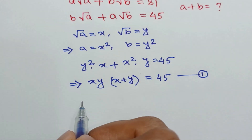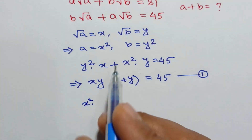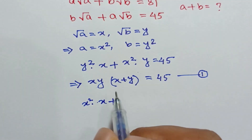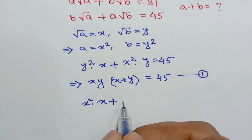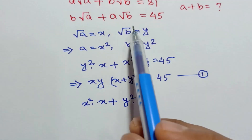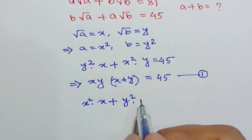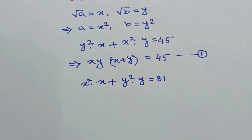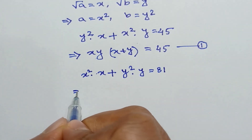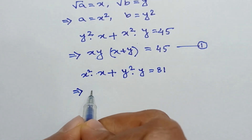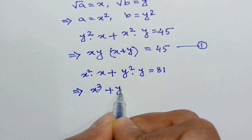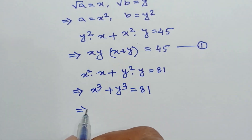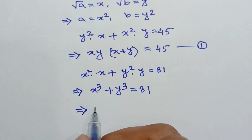Now substituting the values in the first equation, we will have x squared times x plus y squared times y is equal to 81, which gives us x cubed plus y cubed is equal to 81.